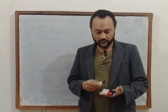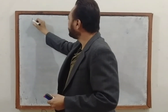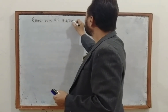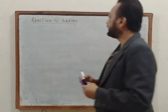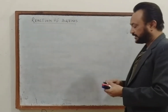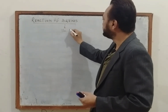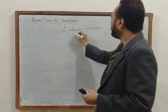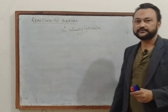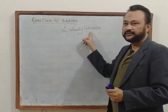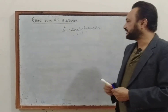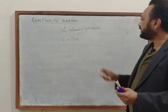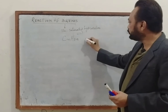Alright students, let's start. As the topic is reactions of alkenes — quick revision: alkenes are said to be unsaturated hydrocarbons where at least one double bond is present between carbon and carbon. The general formula is CnH2n, and the naming converts from '-ane' to '-ene'.